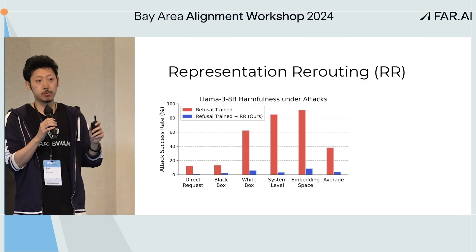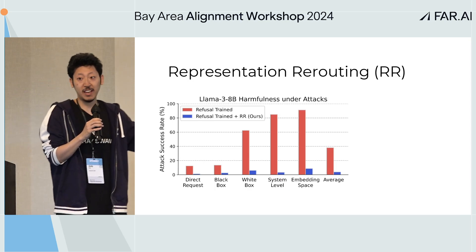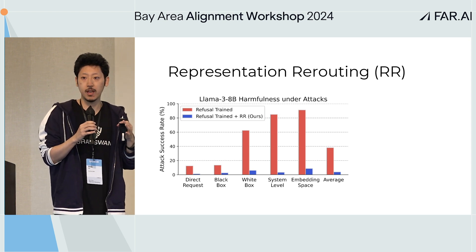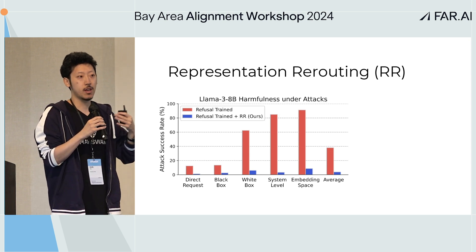Representational routing is one method for circuit breaking. We benchmarked across different types of attacks and significantly reduce harmfulness — even in the presence of unseen attacks. It's not adversarial training; we don't train against any attacks. It directly generalizes because we're reducing inherent model hazards instead of reducing vulnerabilities.